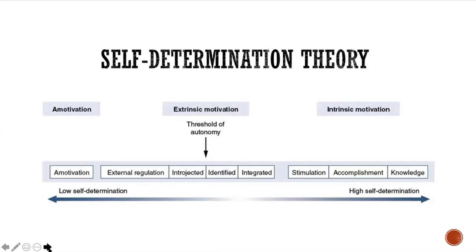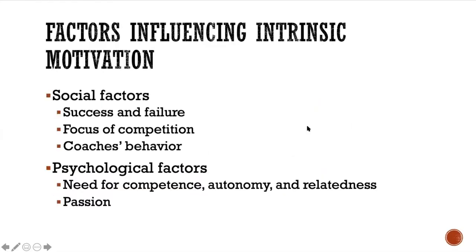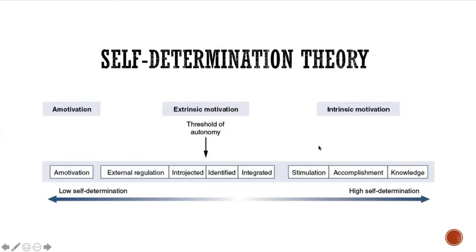There are various versions of extrinsic motivation, and those involve some level of external control. There is this threshold of autonomy on the continuum. Moving to the right, we are finally in control of some of these things. From the threshold to the left, things are very much not in our control — they're separated from us. As we move toward the threshold of autonomy, things become more and more in our control.